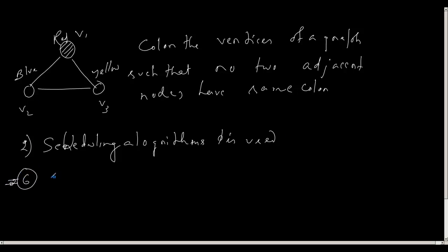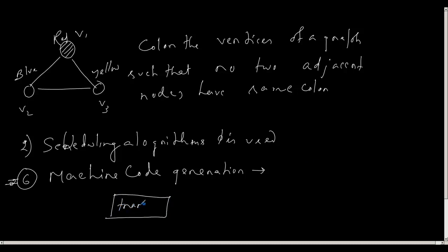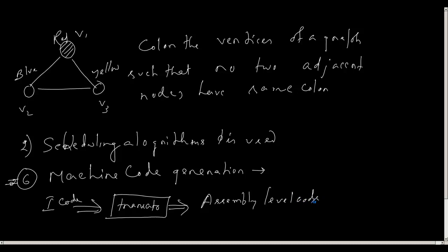After register allocation, the sixth stage is machine code generation. Given the intermediate code, we use a translator that takes the intermediate code and generates the assembly level code. This assembly level code is machine dependent — for a given specific architecture, whether it is x86, Linux, or Solaris, the assembly code differs. The compiler decides the target architecture and generates the corresponding assembly level code.